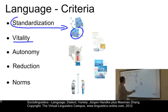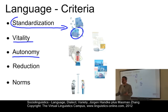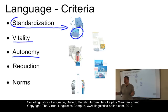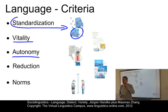Autonomy is the next criterion. Autonomy is a matter of feeling and thus a rather subjective criterion — a language must be felt to be different from other languages. But as we've already seen, for example with Jamaican Creole, this is a matter of degree rather than an all-or-none criterion.